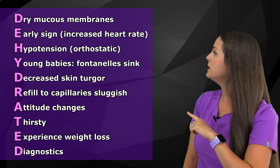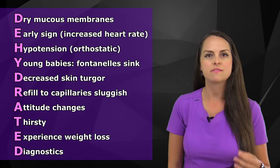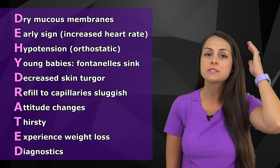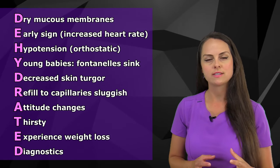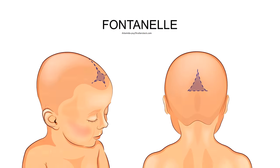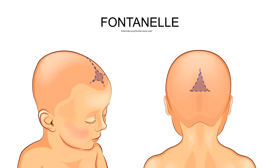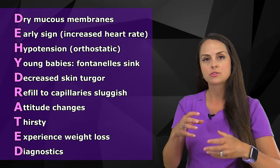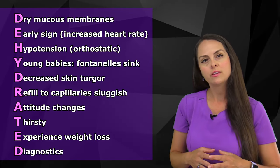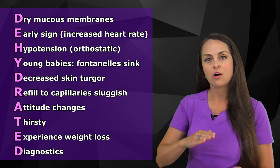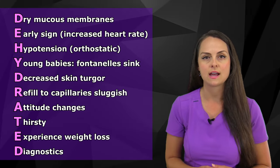Y is for young babies — when severely dehydrated, they will have sunken fontanelles. These are the soft spots on an infant's head that exist because the skull plates haven't fully fused, facilitating vaginal delivery. Normally they should not be sunken in; if they are, this is an extremely bad sign.